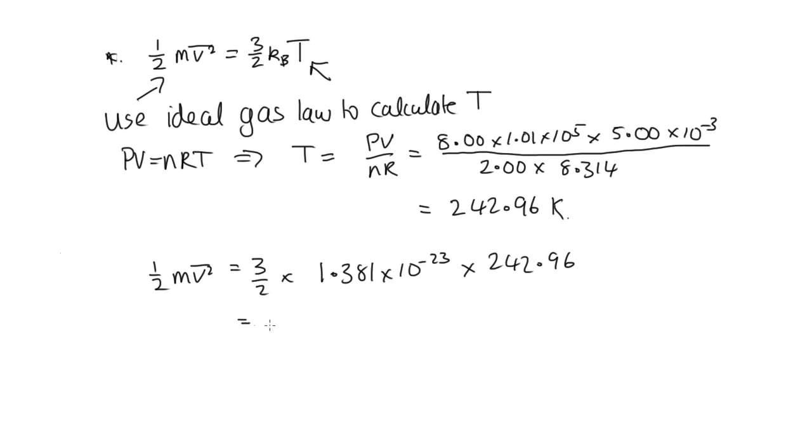And solving that on the calculator, we get 5.03 times 10 to the minus 21 joules, which is a very small number. But then this is talking about a single oxygen molecule, which has a very low mass, so we would expect it to be very small.